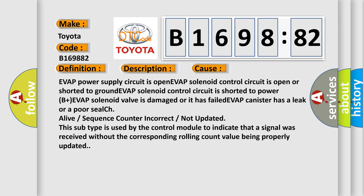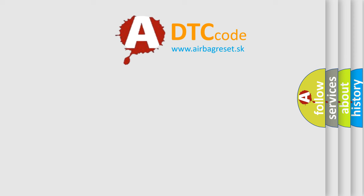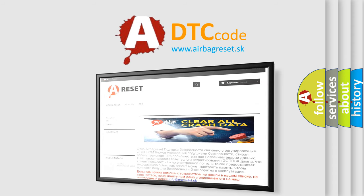If your EVAP canister has a leak or a poor seal, a live or sequence counter incorrect or not updated, this subtype is used by the control module to indicate that a signal was received without the corresponding rolling count value being properly updated. The airbag reset website aims to provide information in 52 languages.